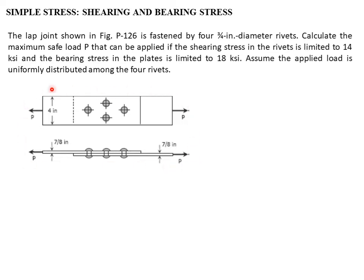In our illustration, we have 2 plates connected with 4 rivets. The width of the plate is 4 inches and the thickness is 7/8 inches. Load P is applied at both ends. If we apply the load, we will consider 2 failure modes: the shearing of rivets and the bearing of plates.